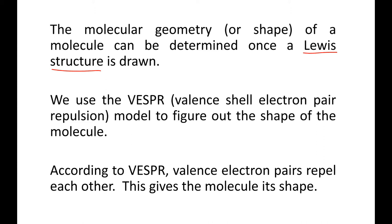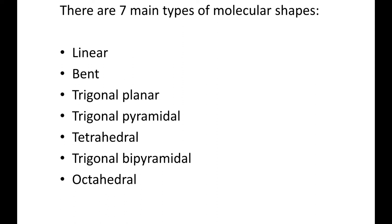That's why we spent all that time doing Lewis structures. You have to be able to do the Lewis structures or you can't figure out the shape. We use the VSEPR theory, valence shell electron pair repulsion model, to figure out the shape of the molecule. According to VSEPR, valence electron pairs repel each other. This gives the molecule its shape.